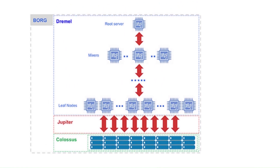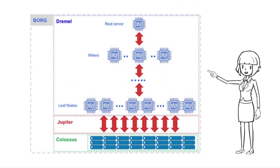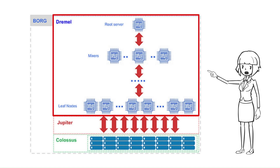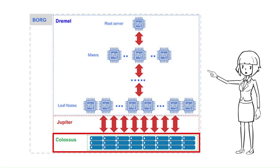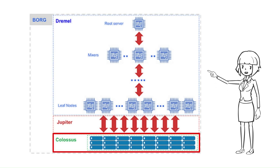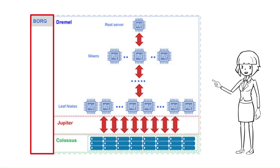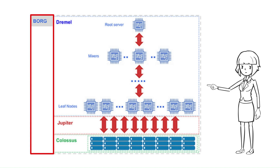Under the hood, BigQuery employs a vast set of multi-tenant services driven by low-level Google infrastructure technologies like Dremel, Colossus, Jupiter, and Borg. Compute is Dremel, a large multi-tenant cluster that executes SQL queries. Storage is Colossus, Google's global storage system. Compute and storage talk to each other through the PetaBit Jupiter network. BigQuery is orchestrated via Borg, Google's precursor to Kubernetes.